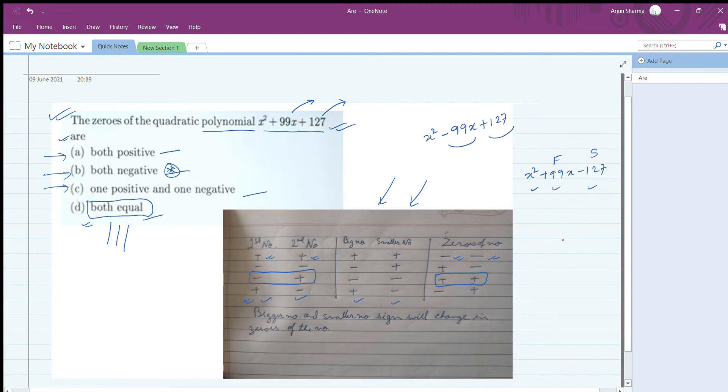The answer will be one zero is negative and the second is positive. Whether the bigger or smaller one is positive or negative, you have to solve to find that out.